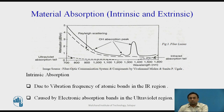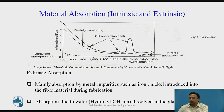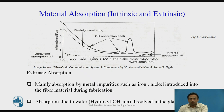Extrinsic absorption is caused by impurities introduced into the fiber materials. Metal impurities such as iron, nickel, and chromium are introduced during fabrication. Extrinsic absorption is caused by electronic transitions of these metal ions from one energy level to another. Extrinsic absorption also occurs when hydroxyl ions — O-H bonds — are introduced into the fiber.